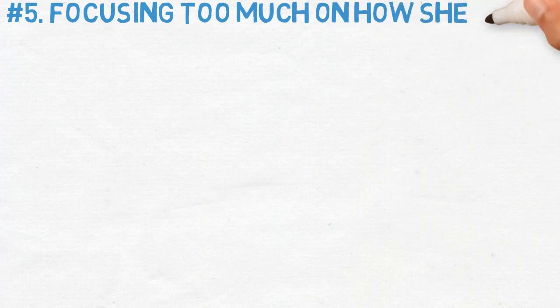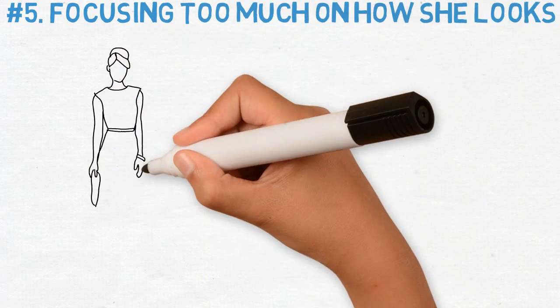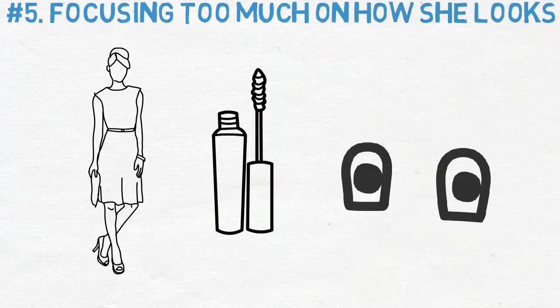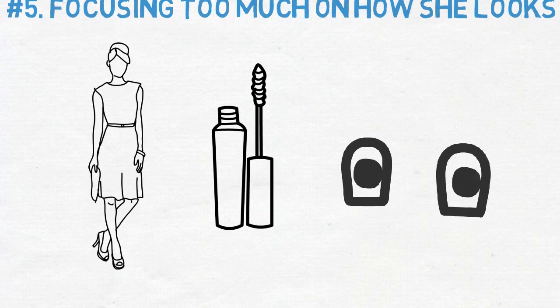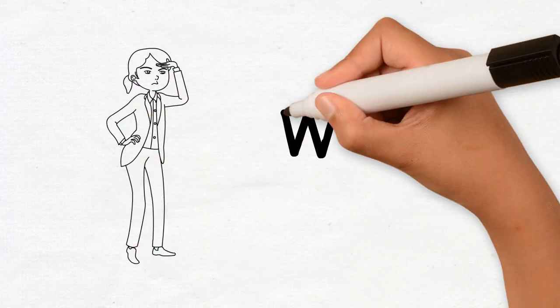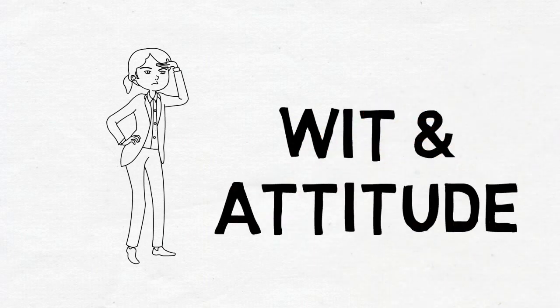Focusing too much on how she looks. Modern women dress up and put on cosmetics to feel pretty and good about themselves, but they know they're worth more than how they look. It's an interesting fact that although women like to catch people's attention by their looks, they want their wit and attitude to be noticed.